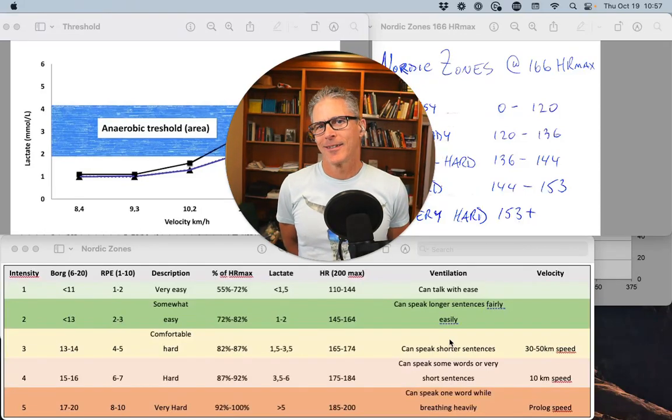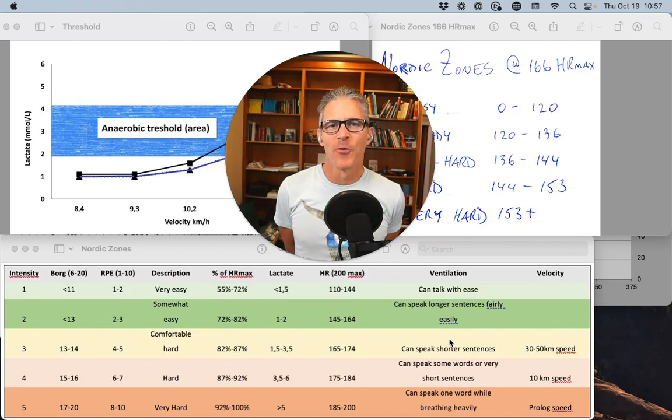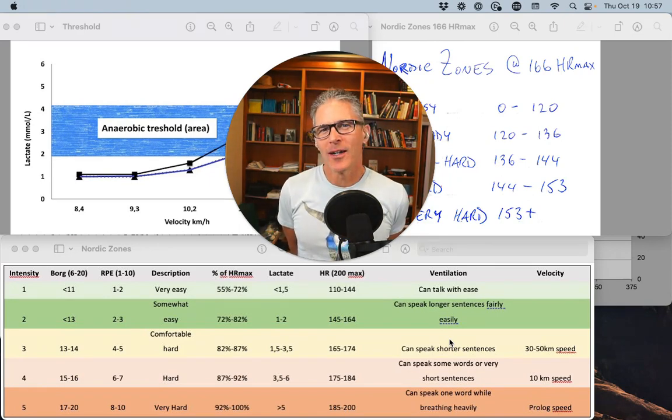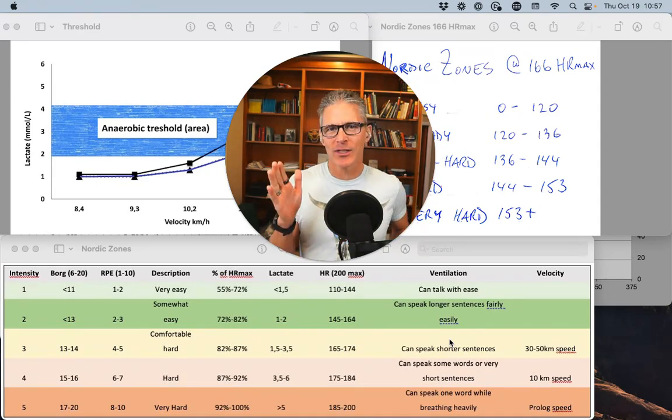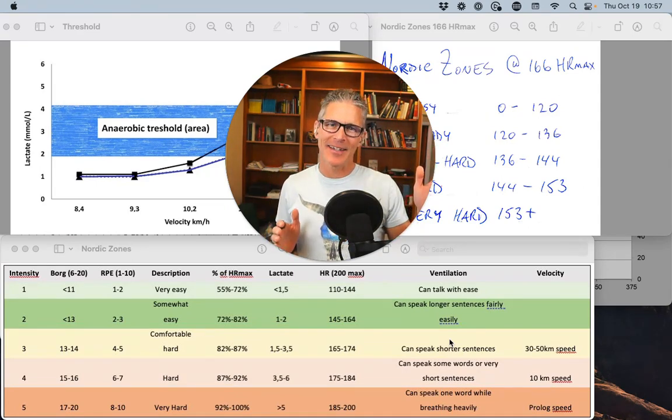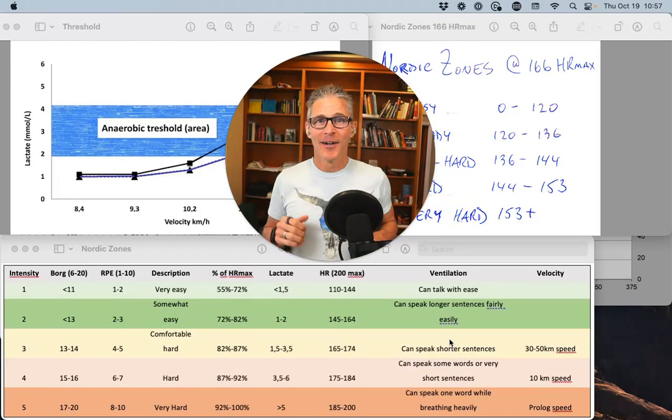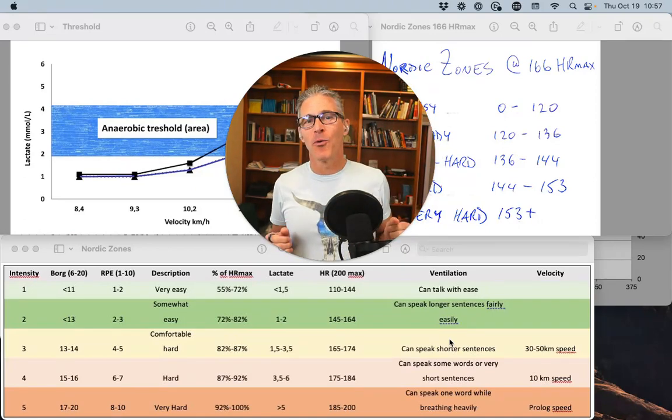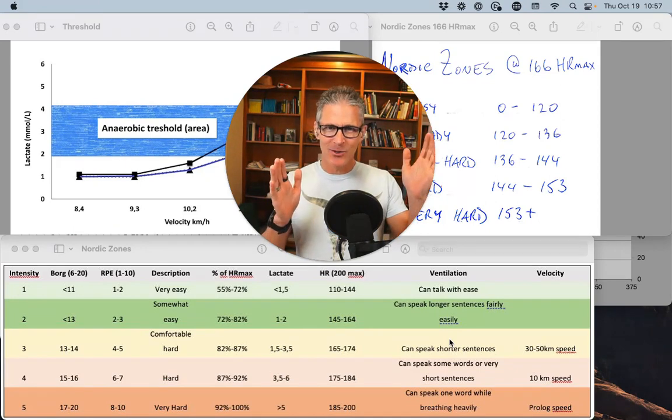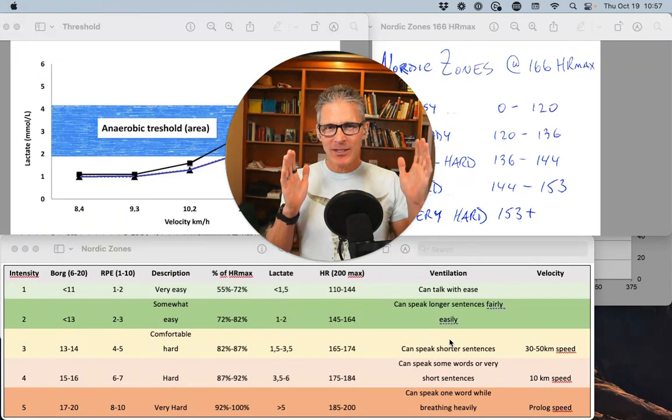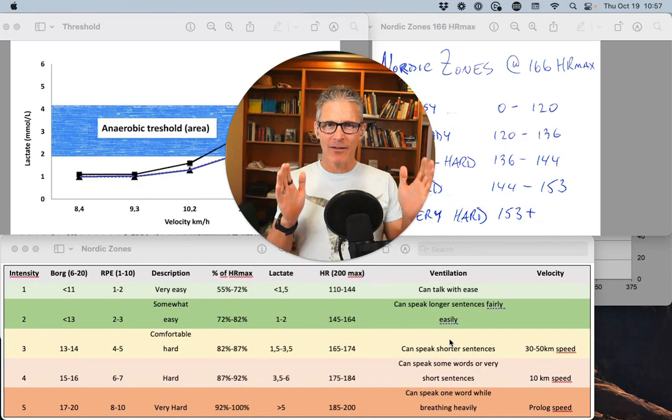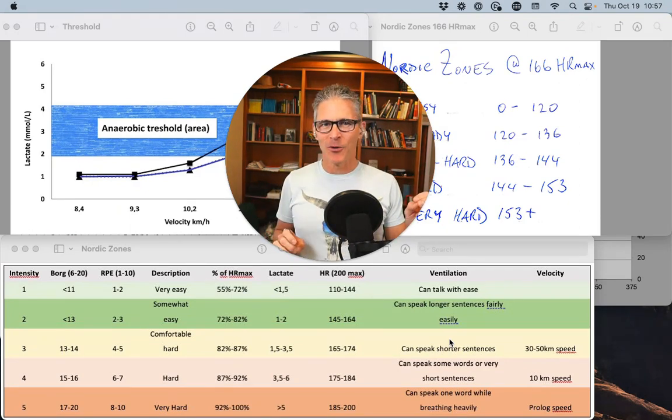Welcome back. Today we're going to talk about determining zone 3 and zone 4. Now, the one thing the critical power crew helped me with was this concept of the heavy domain. This area between the first lactate threshold and the second lactate threshold, or if you prefer aerobic threshold, your critical power points. There's a lot of different names for these two transition points. But this concept of the heavy domain, the heavy domain consists of zone 3 and zone 4.